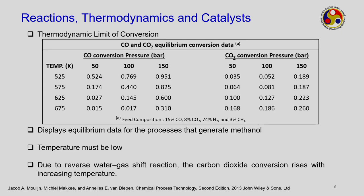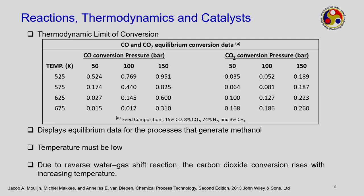Now the thermodynamic limit of conversion: with a feed of 15% CO, 8% CO2, 74% H2, and 3% methane, as you increase temperature the conversion of CO to methanol decreases, so lower temperature is preferable. With pressure from 50 to 100 bar and beyond, higher pressure favors conversion. Therefore, thermodynamic constraints require low temperature and high pressure.